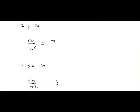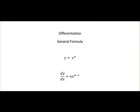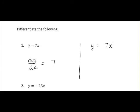So I'll show you the first example. So if we just look back at our general formula, what we do is x to the power of n, and we differentiate that, we multiply by the power and reduce the power by 1. So we're going to do the exact same in this particular question. We have 7x or 7x to the power of 1.